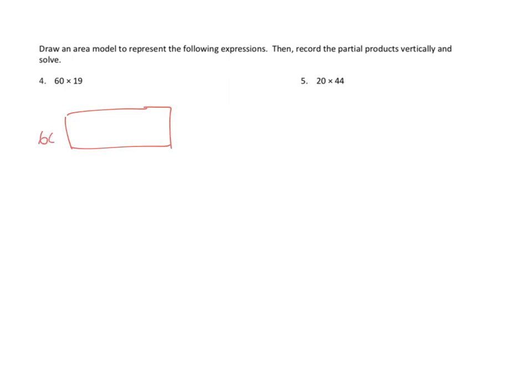Let's take a look at problem number four. We are going to draw an area model to represent the following expressions and then record the partial products vertically and solve. We're going to do the same kind of problem that we did the last time, except they haven't given us any extra support. We took our rectangle and we broke down 60 on the side, and on the top, we decided we were going to break this down into 10 and 9.